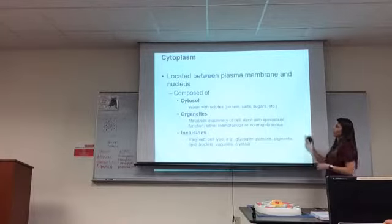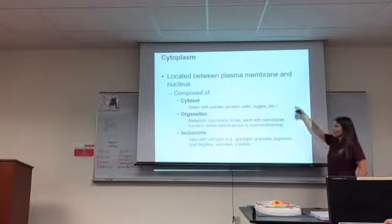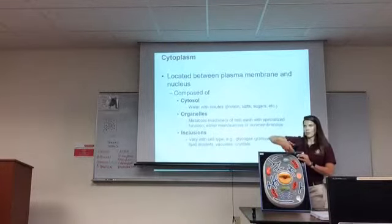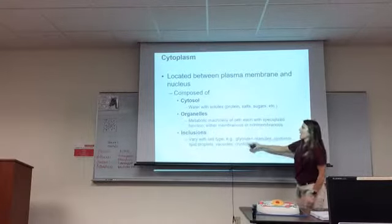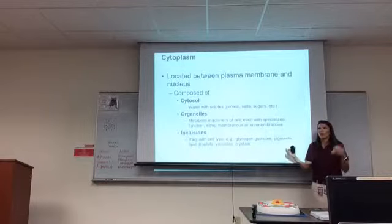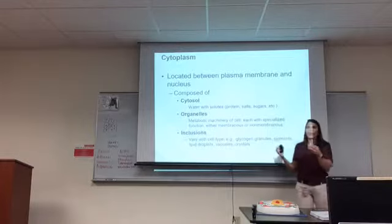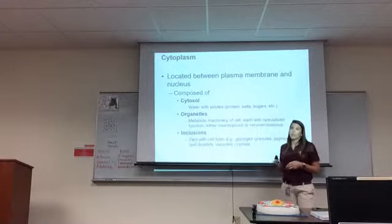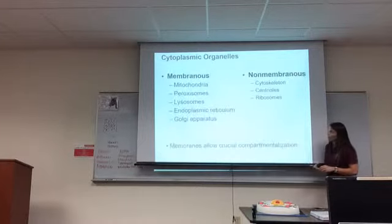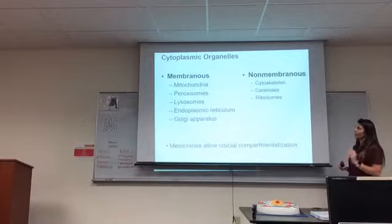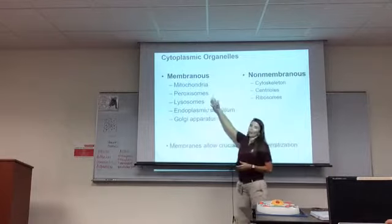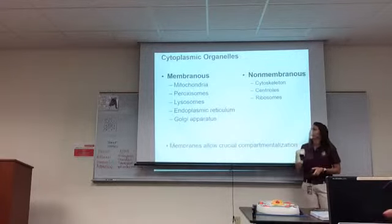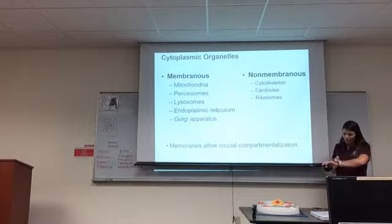I've already discussed cytoplasm: everything outside the nucleus but inside the plasma membrane, with two components — cytosol and organelles. Inclusions are the name we give to random things that we aren't exactly sure what they are — they show up in certain cells but are not uniform across all cells. Here are the organelles we're going to discuss. If they have a membrane around them, we call them membranous organelles. If they don't, we call them non-membranous.